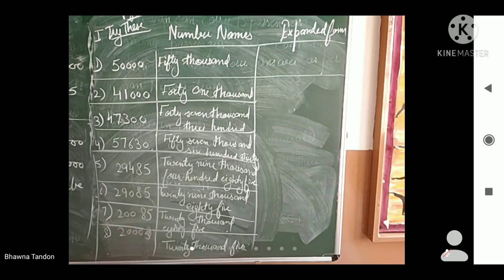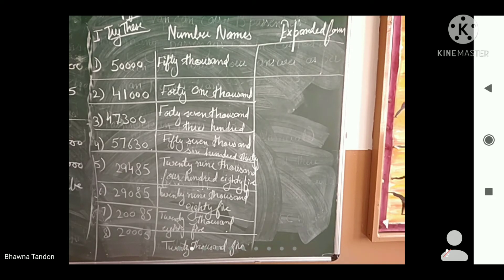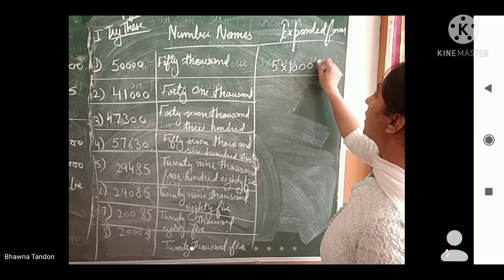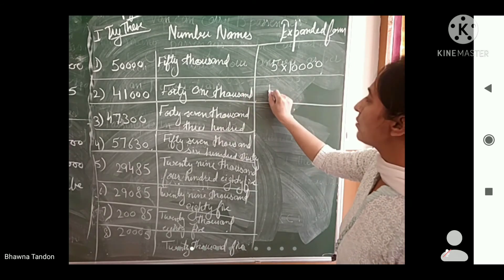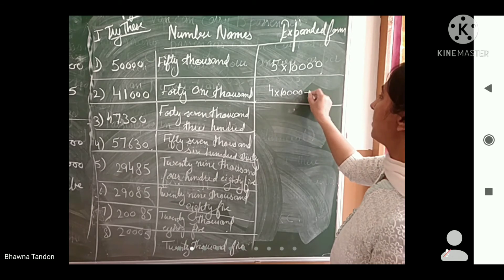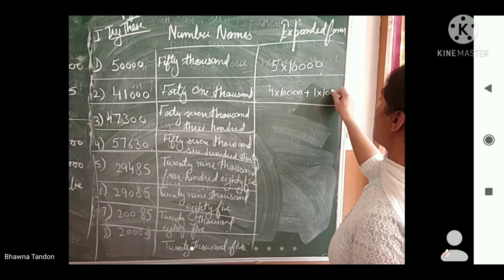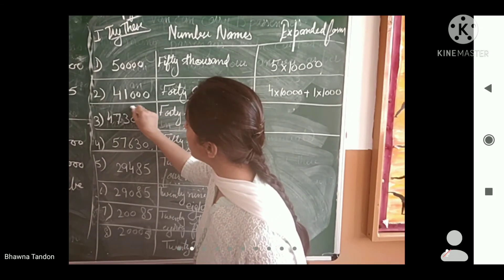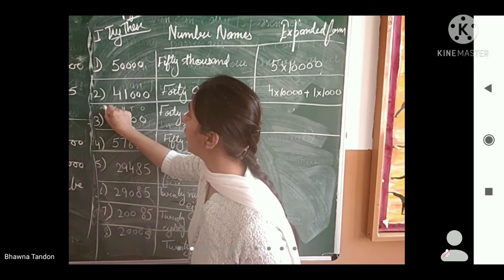You can complete the expansions yourself. The expanded form for 50,000 is 5 × 10,000. For 41,000 it is 4 × 10,000 + 1 × 1,000, which gives 40,000 + 1,000 = 41,000. You can do the place values: 1, 10, 100, 1,000, 10,000.